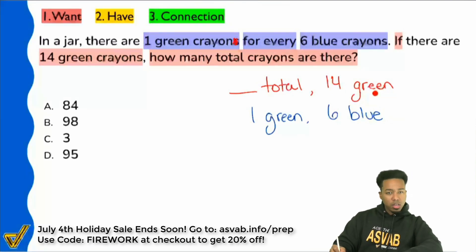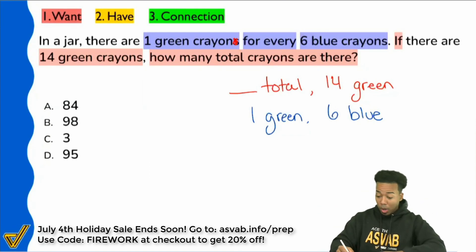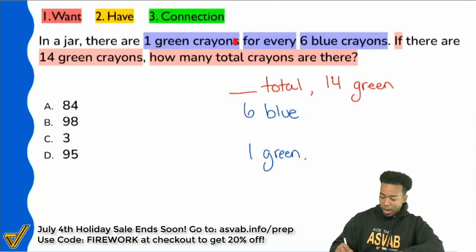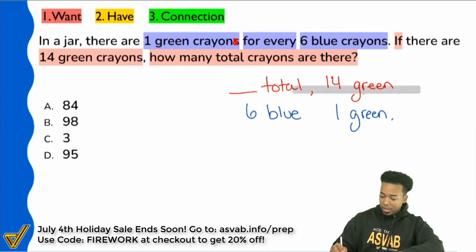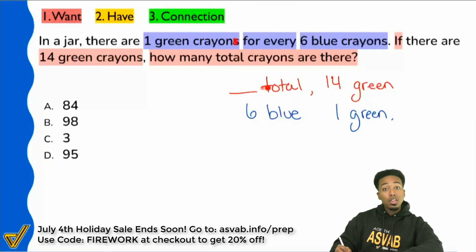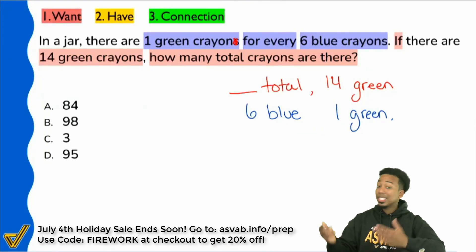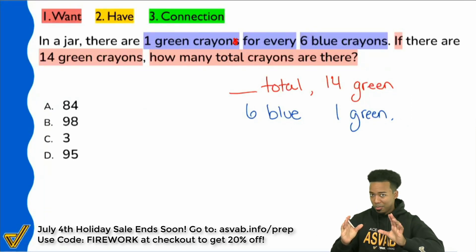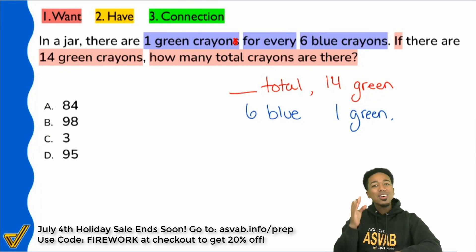You might be saying: we have green here and green here, Coach — all we have to do is swap it out. And you'd be partially correct, because now we're comparing green and green in the same places. But what isn't awesome is right here: on one side we're comparing total to green, and on the other side we're comparing blue to green. That's a big problem. We don't want that. The way we're going to fix this is by making sure we compare the same things in the same way.